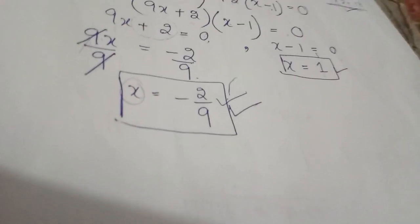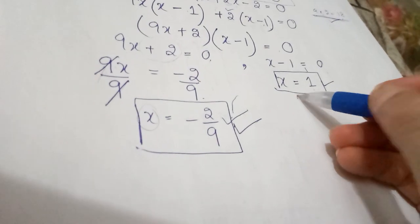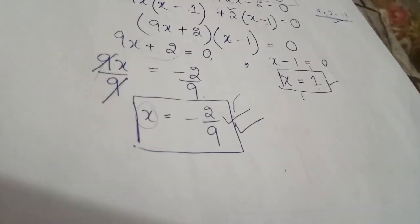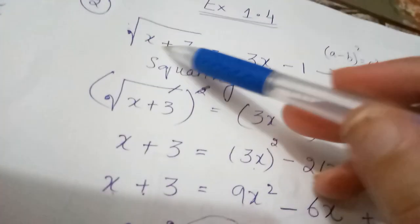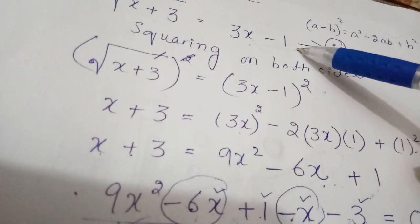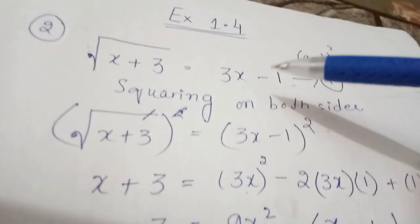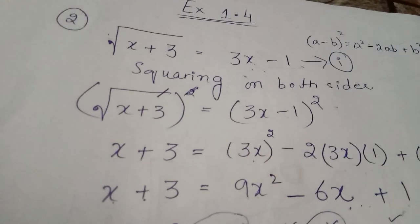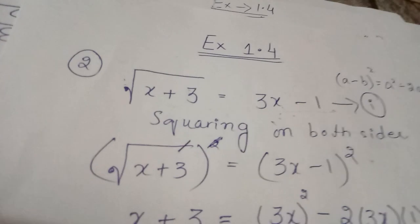After solving the radical equation, the next step is verification. Substitute each x value back into the original equation one by one and check whether both sides give an equal answer — for x = 1 and for x = −2/9.